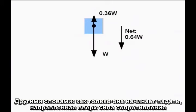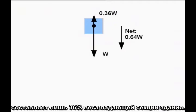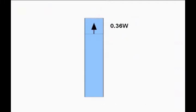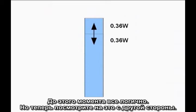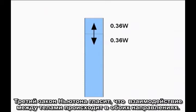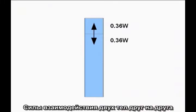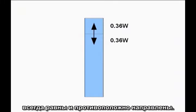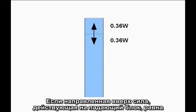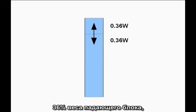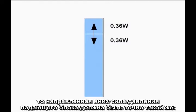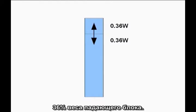In other words, once it starts falling, the upward resistive force is only 36% of the weight of the falling section of the building. Newton's Third Law says interactions between objects work both ways. The forces two objects exert on each other are always equal and opposite. If the upward force acting on the falling block is 36% of the weight of the falling block, the downward force exerted by the falling block must be exactly the same — 36% of the weight of the falling block.